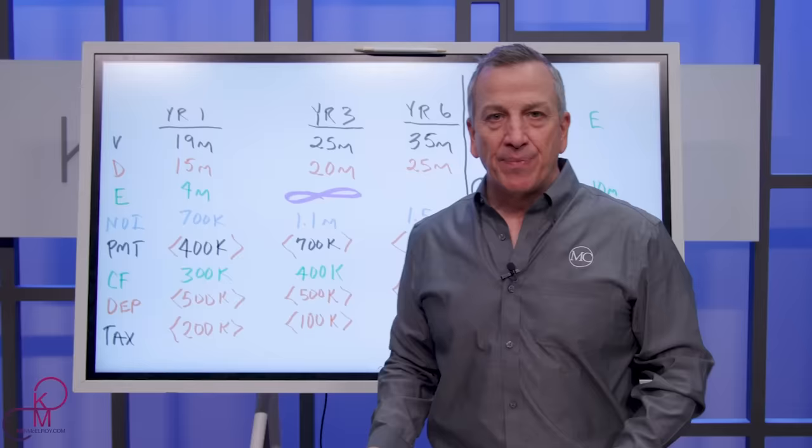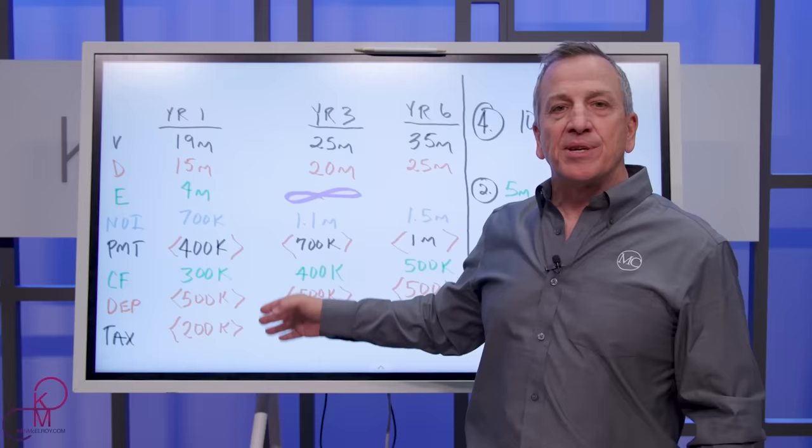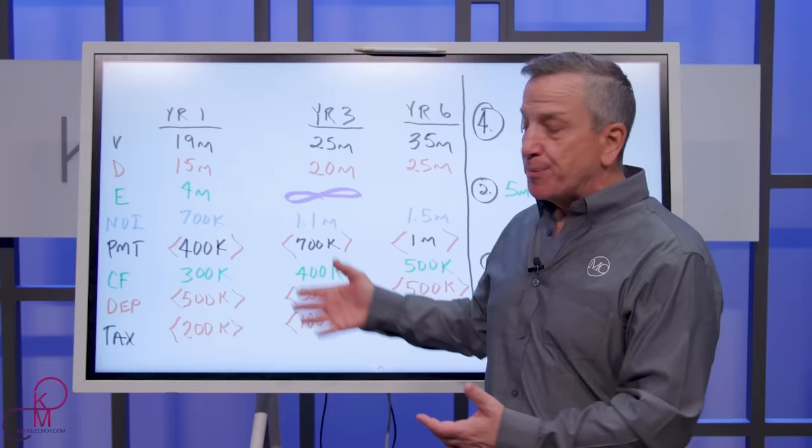So in theory, this was a good deal on its own without the value add. You could invest $4 million and get about $300,000 in cashflow. This would produce about a 7% cash on cash, not a bad investment just as it stands today.